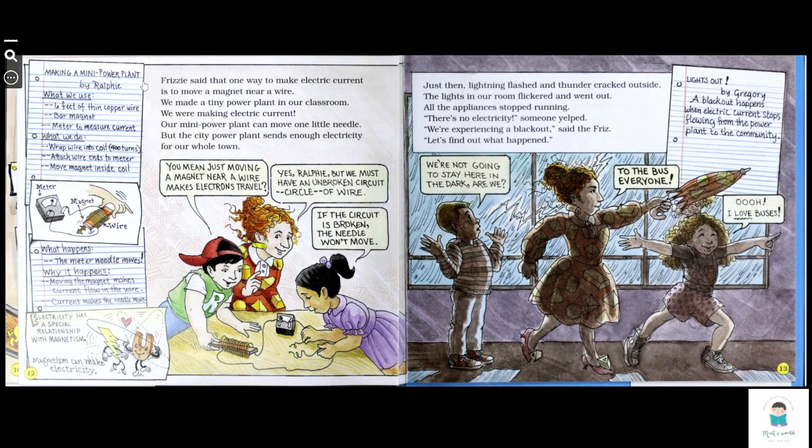Making a medium power plant by Rafi. What we use? 10 feet of thin copper wire, bar magnet, meter to measure current. What we do?